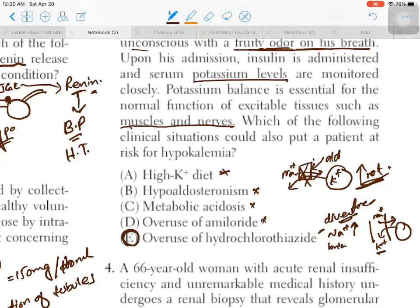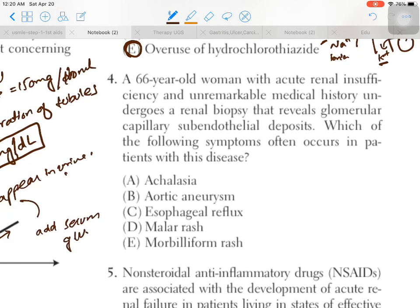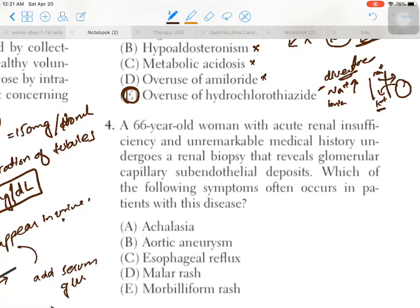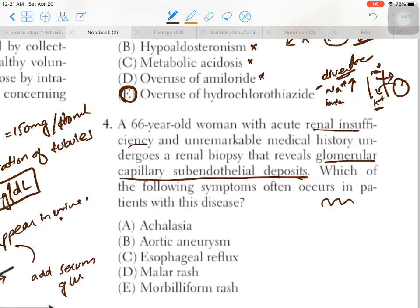A 66-year-old woman with acute renal insufficiency and unremarkable medical history undergoes a renal biopsy that reveals glomerular capillary subendothelial deposits. We can see some spikes and dome-shaped depositions under the basement membrane and endothelial cells. Which of the following symptoms often occur in patients with this disease?